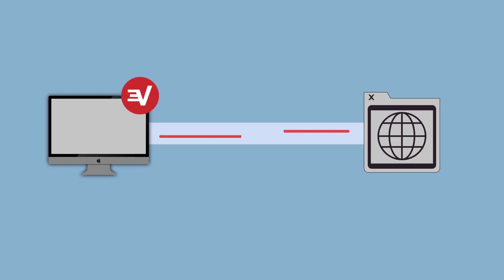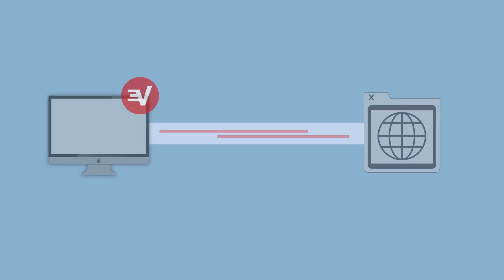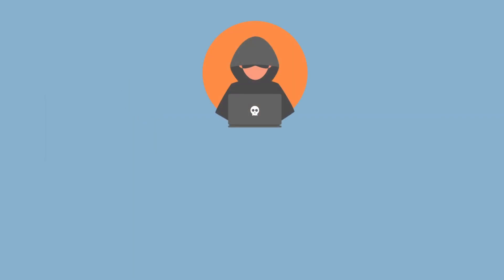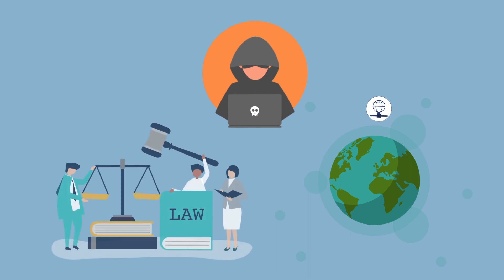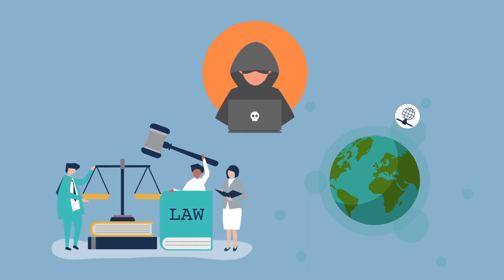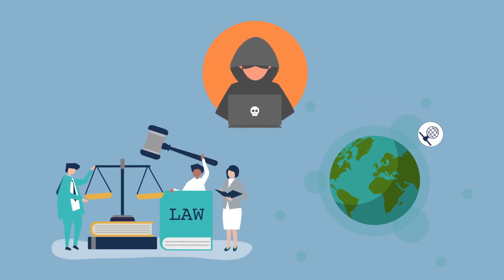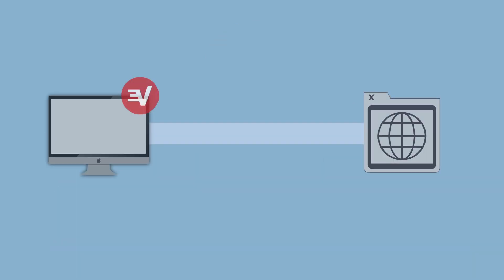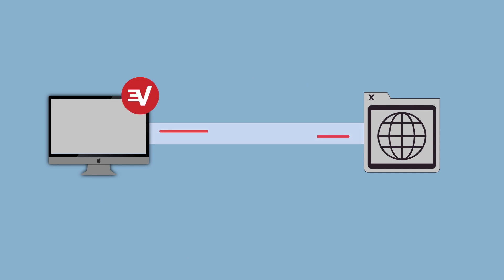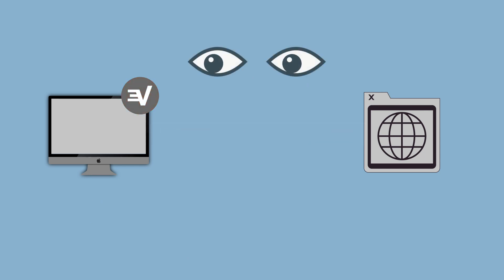When using a VPN, your internet activity is encrypted through a secure tunnel so that third parties such as hackers, internet service providers, and the government can't see what you're doing. However, if your internet connection drops temporarily, causing a disconnection with your VPN, your web activity may be exposed to prying eyes.